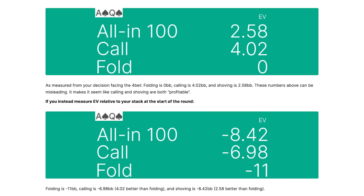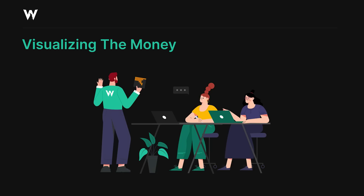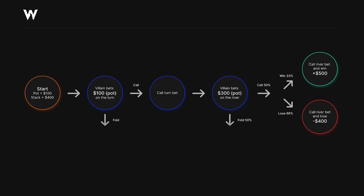With that perspective in mind, let's visualize the money. It's a $100 pot, $400 stack. Villain bets $100 on the turn; we can call or fold. If we call, villain will always bet the river. If we call again and win, we win $500 — that's villain's stack plus the pot. If we call and lose, we lose our $400 stack. If we call the turn then fold the river, we lose our $100 turn call. Folding immediately on the turn loses zero.